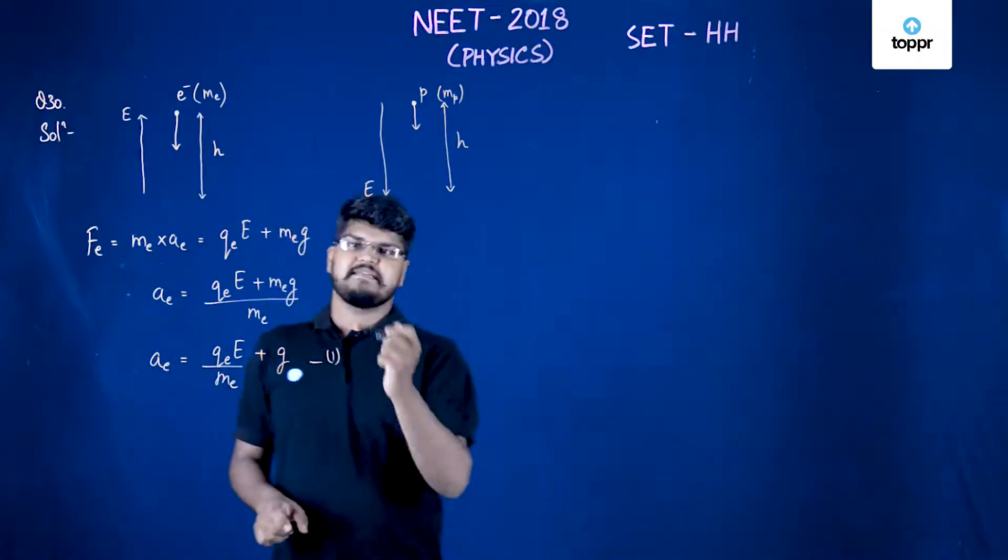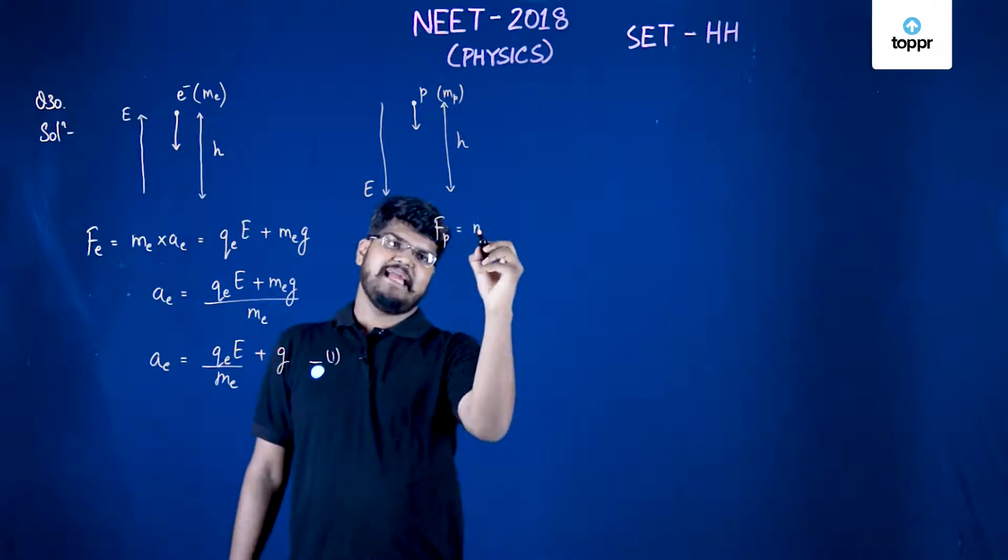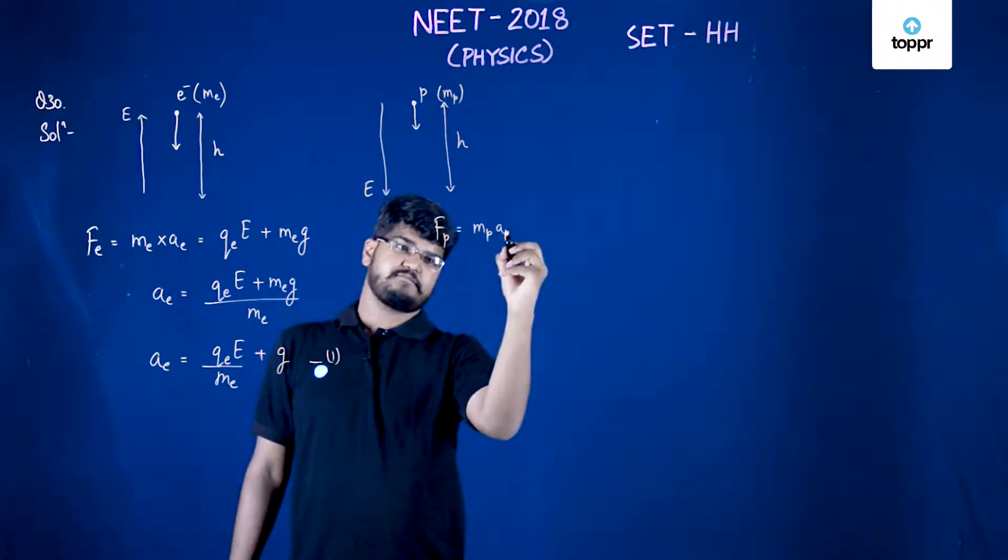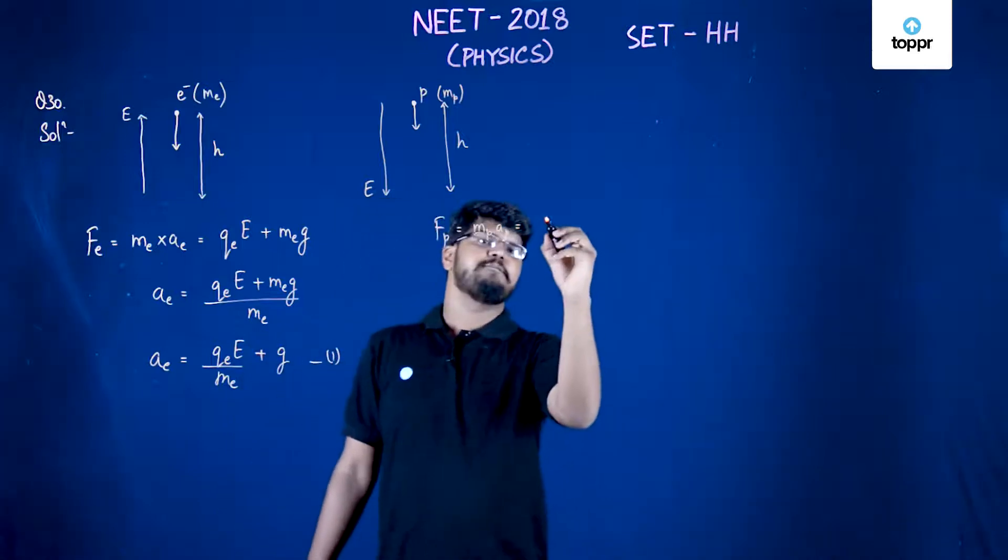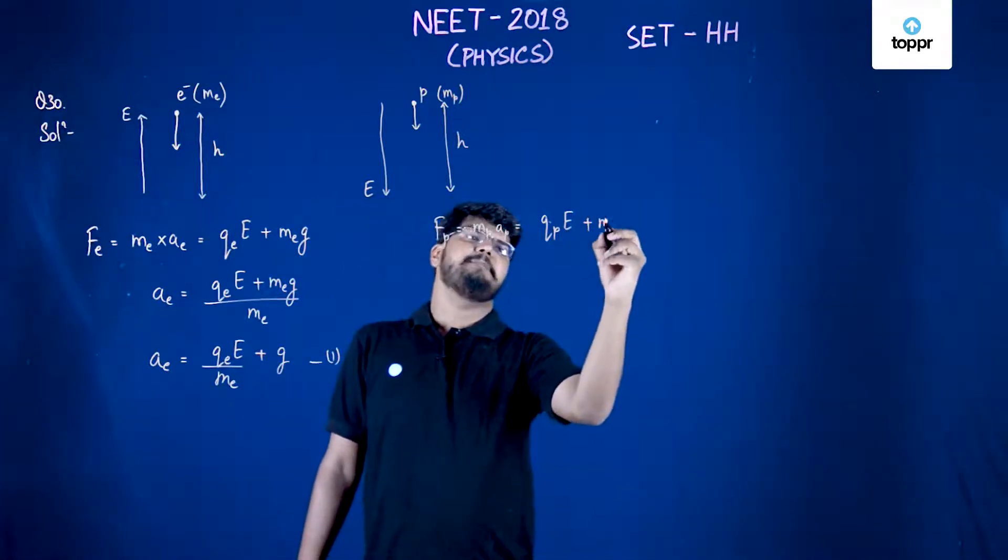Now, for the similar case with the proton, I can say that FP (the force on the proton) would be MP*AP. It will be equal to QP*E plus MP*G.